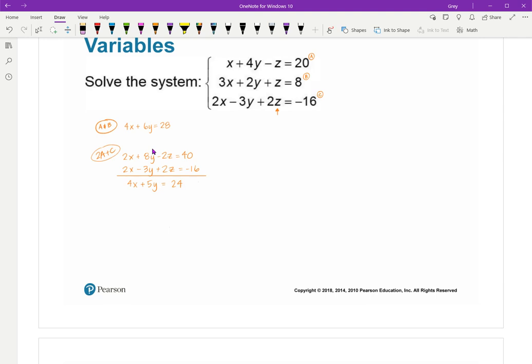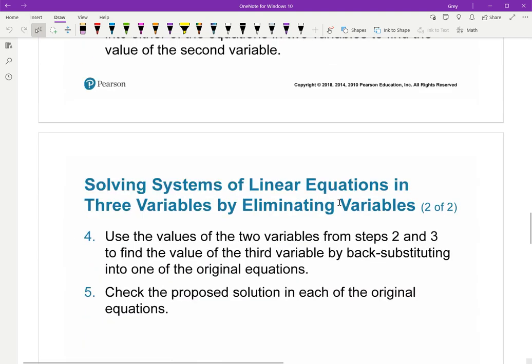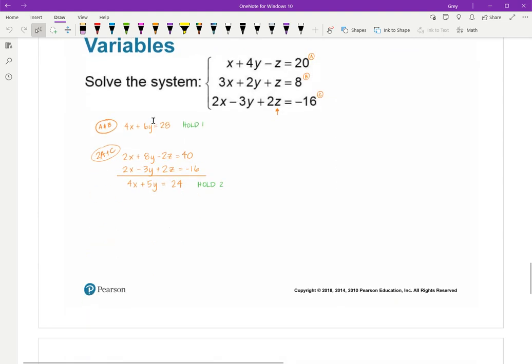2X plus 2X is 4X. 8Y minus 3Y is 5Y. Negative 2Z and positive 2Z are going to be 0. And then 40 and negative 16 give me 24. I refer to that as my hold equation, hold number 1. I made another variable fall out, that's my hold number 2. And basically, now we're back to what we did in 7.1, two equations and two unknowns.